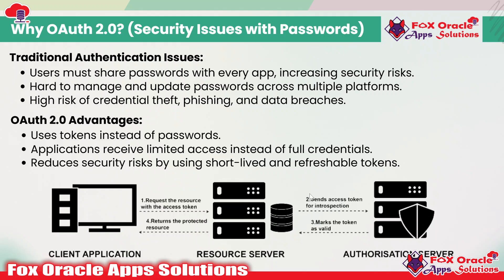That's why OAuth 2.0 has lots of advantages, which includes using a token instead of a password. Users don't need to share the user ID and password to access the application — they just require an access token. When applications receive limited access instead of full credentials, it reduces the security risk by using short-lived and retraceable tokens. The token received to access the application can be configured to expire in a few minutes, so every time we have to generate new tokens, there is no chance of tapping the credentials.